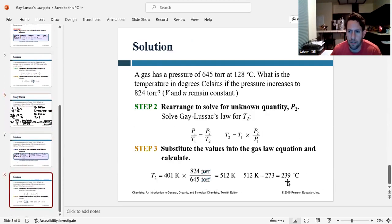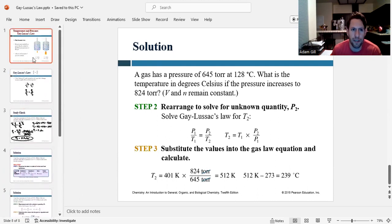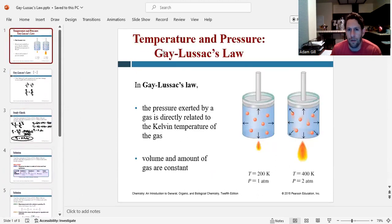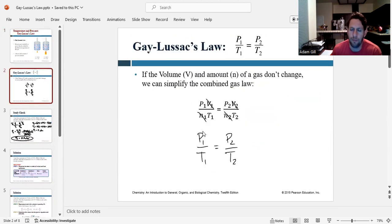And looks like we did it right. So once again, to recap, Gay-Lussac's law is comparing temperature and pressure. And so pressure 1 over temperature 1 equals pressure 2 over temperature 2. And you can derive this from the combined gas law when volume and moles don't change. Thanks for watching. I'll see you in the next video.